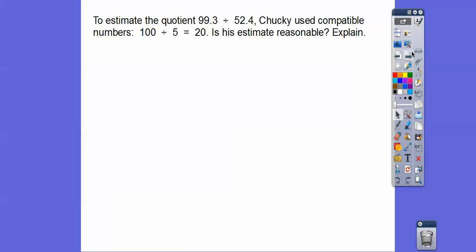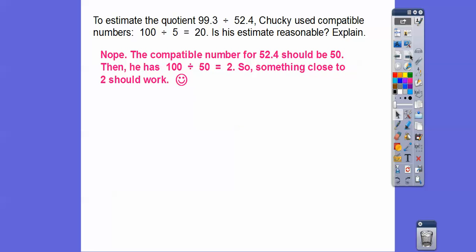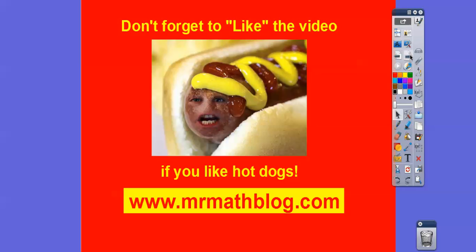All right. One more problem. So to estimate the quotient, 99.3 divided by 52.4, Chucky uses compatible numbers. He used the compatible numbers 100 for this one and five for this one. And 100 divided by five is 20. Is his estimate reasonable? I know 100 divided by five equals 20, but he rounded this number incorrectly. This should be 50 right here. So no, it's not reasonable. So the compatible numbers for 52.4 is 50. So then he should have had 100 divided by 50, which is two. So anything that's close to two should work. All right, you guys. I hope that makes sense. Take care.